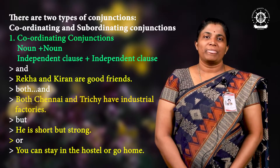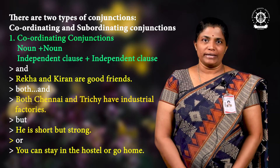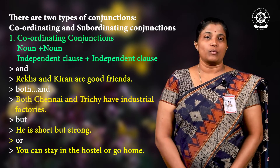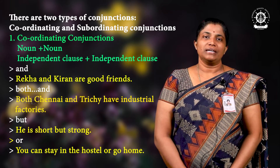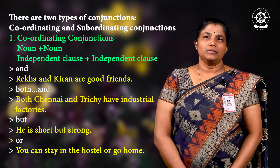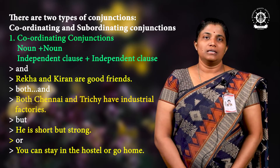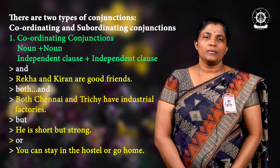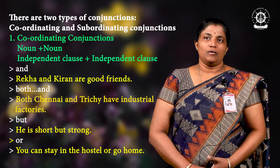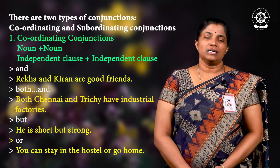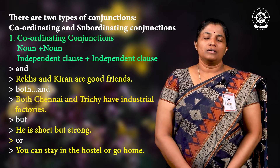There are two types of conjunctions: coordinating conjunctions and subordinating conjunctions. Coordinating conjunctions are used to connect words or one independent clause with another independent clause.